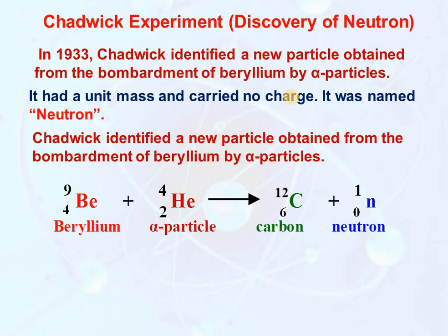Chadwick's experiment and discovery of neutron: After the discovery of protons and electrons, it was observed that if protons are present within the nucleus there must be repulsion between them, yet the nucleus is stable — suggesting there are certain particles within the nucleus which help in its stability. In 1932, Chadwick identified a new particle obtained from the bombardment of beryllium by alpha particles. It has unit mass and carries no charge, and was named neutron. Beryllium with atomic mass 9, on bombardment with helium (atomic mass 4, atomic number 2), gave carbon (atomic number 6) and a neutron — a new particle with charge 0 and mass 1.